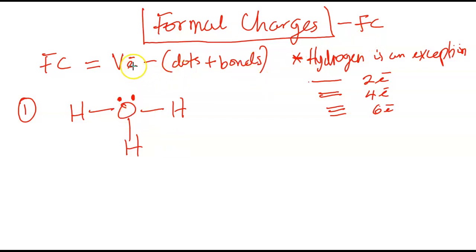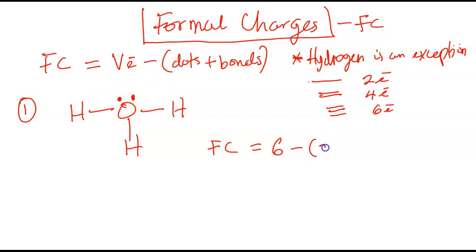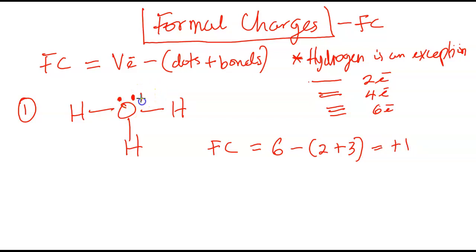The formal charge is equal to the valence electron — determined by the group of that atom in the periodic table — minus the number of electron dots, plus the bonds. So in calculating this oxygen: oxygen is in group 6 of the periodic table, so it's going to be 6 minus. The number of dots in this atom is two dots, plus how many bonds does it have? It has one, two, three — it has three bonds. Two plus three is five. Six minus five gives us plus one.